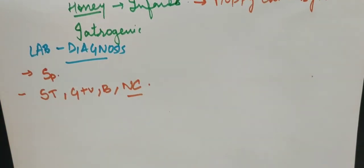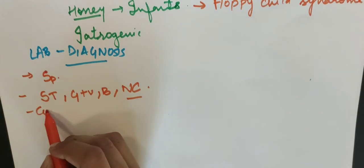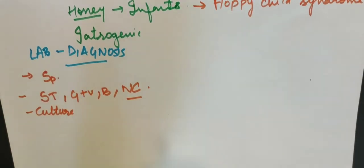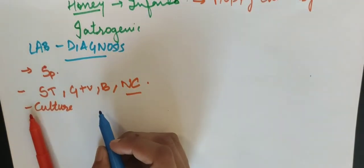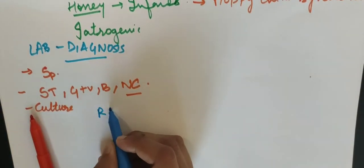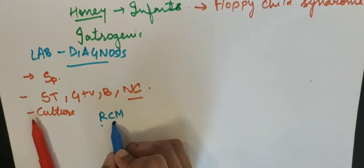So now we will do our gram staining. Then isolation culture. Culture. We have done blood agar. Or then Robertson's cooked meat broth, which we have told last time. That we have used Robertson's cooked meat broth. What does it do?